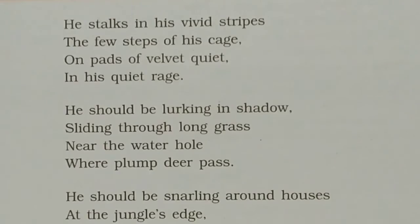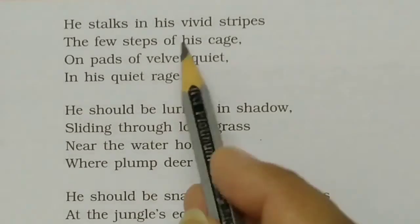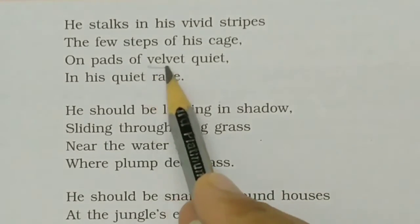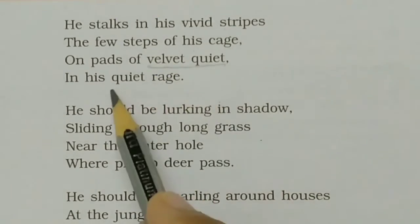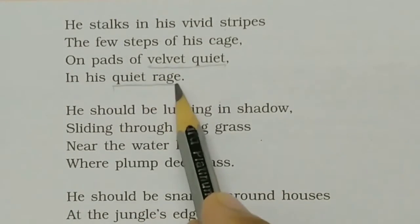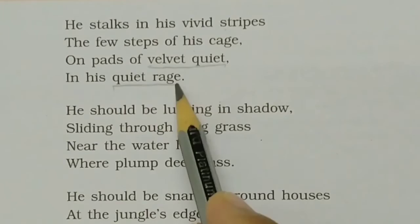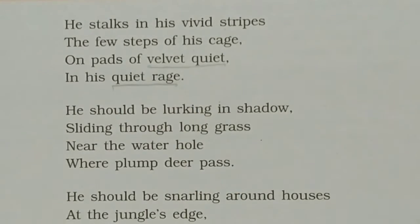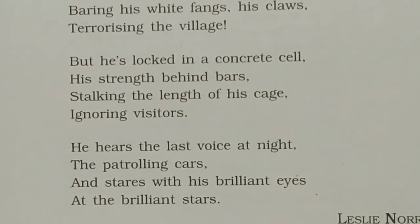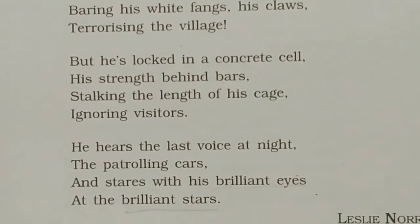The poetic devices used in the poem include repetition — the repetition of words and phrases in the same line, like 'velvet,' 'quiet quiet rage,' and 'brilliant eyes' and 'brilliant stars' in the last stanza.